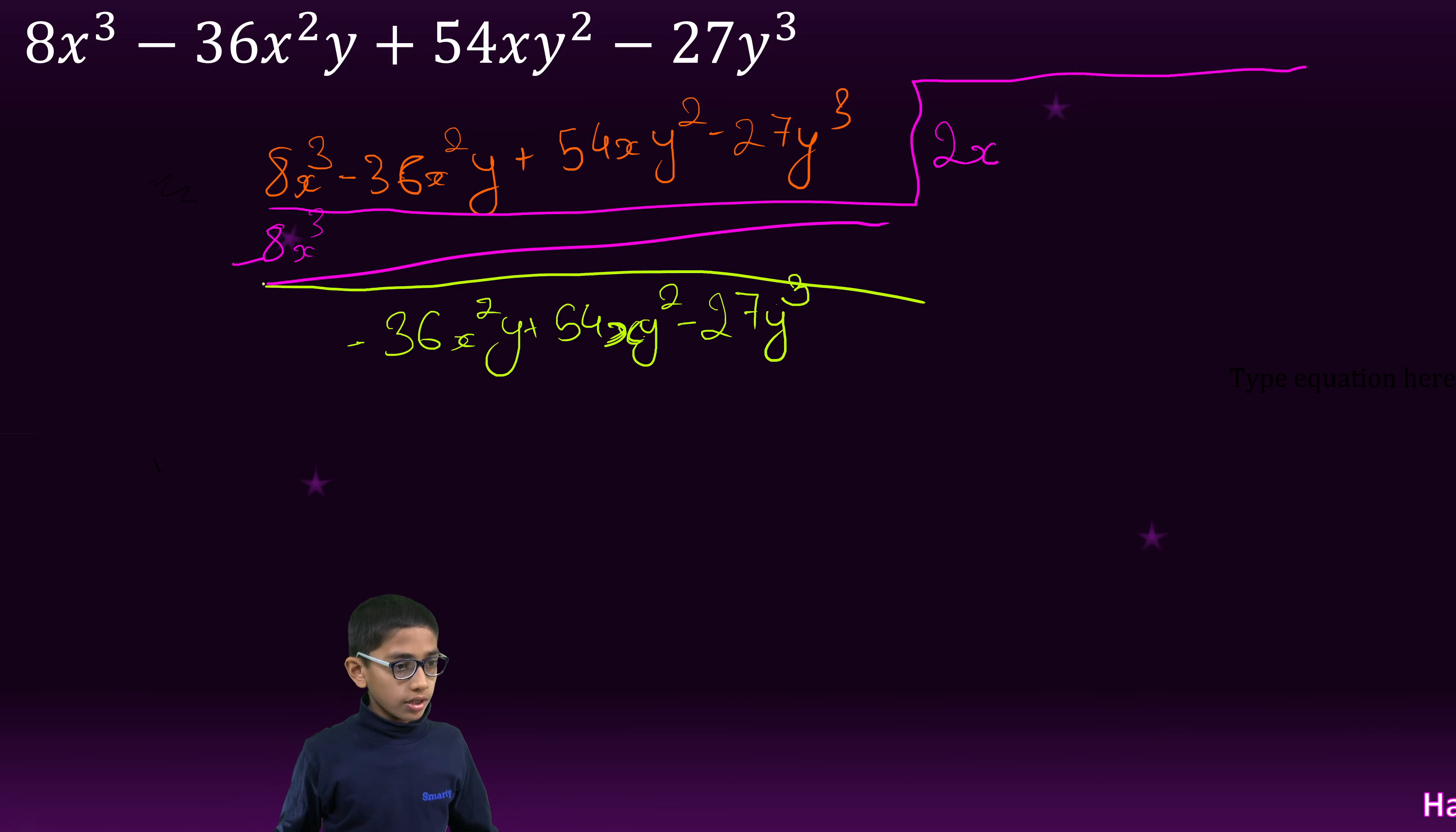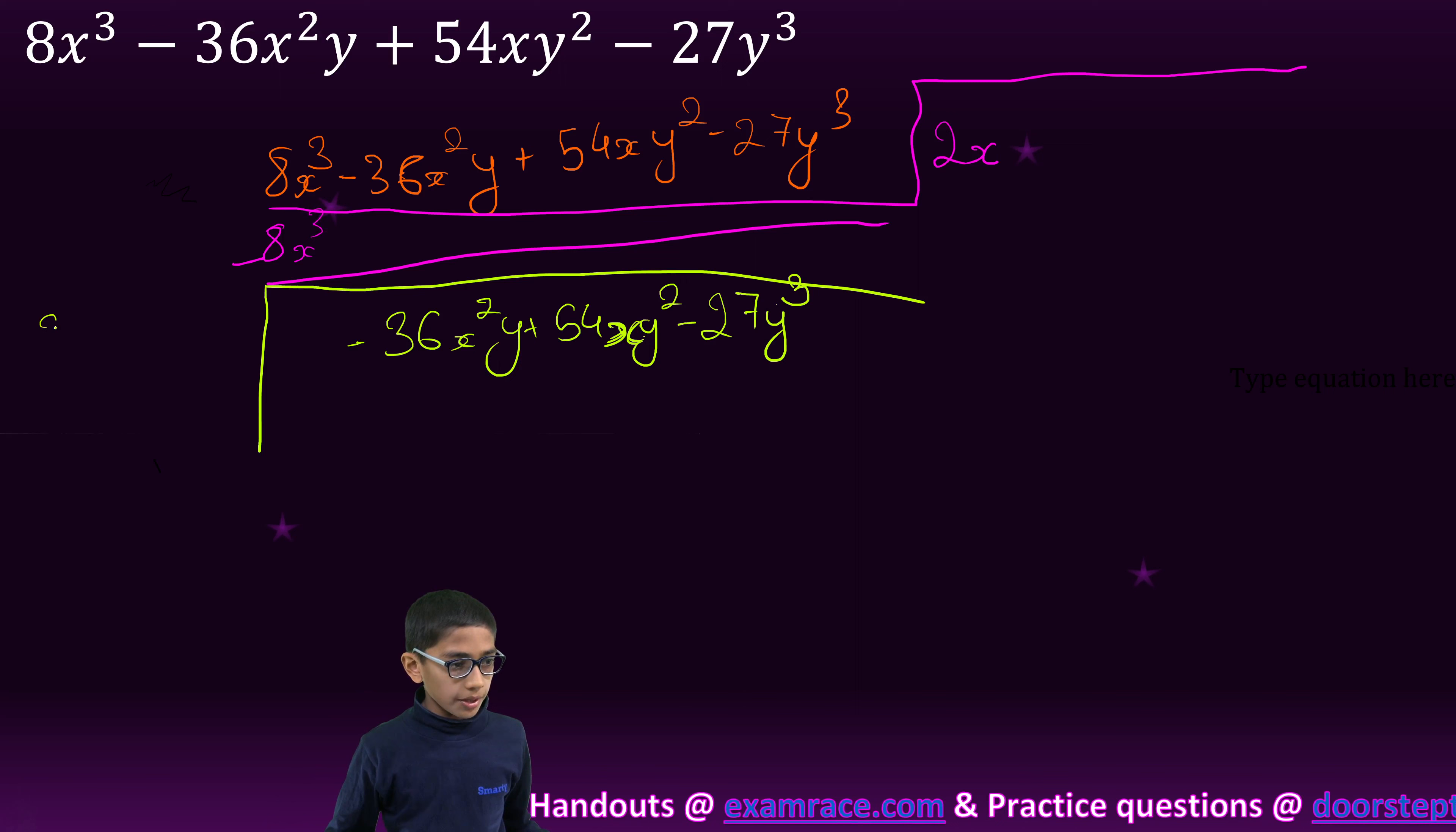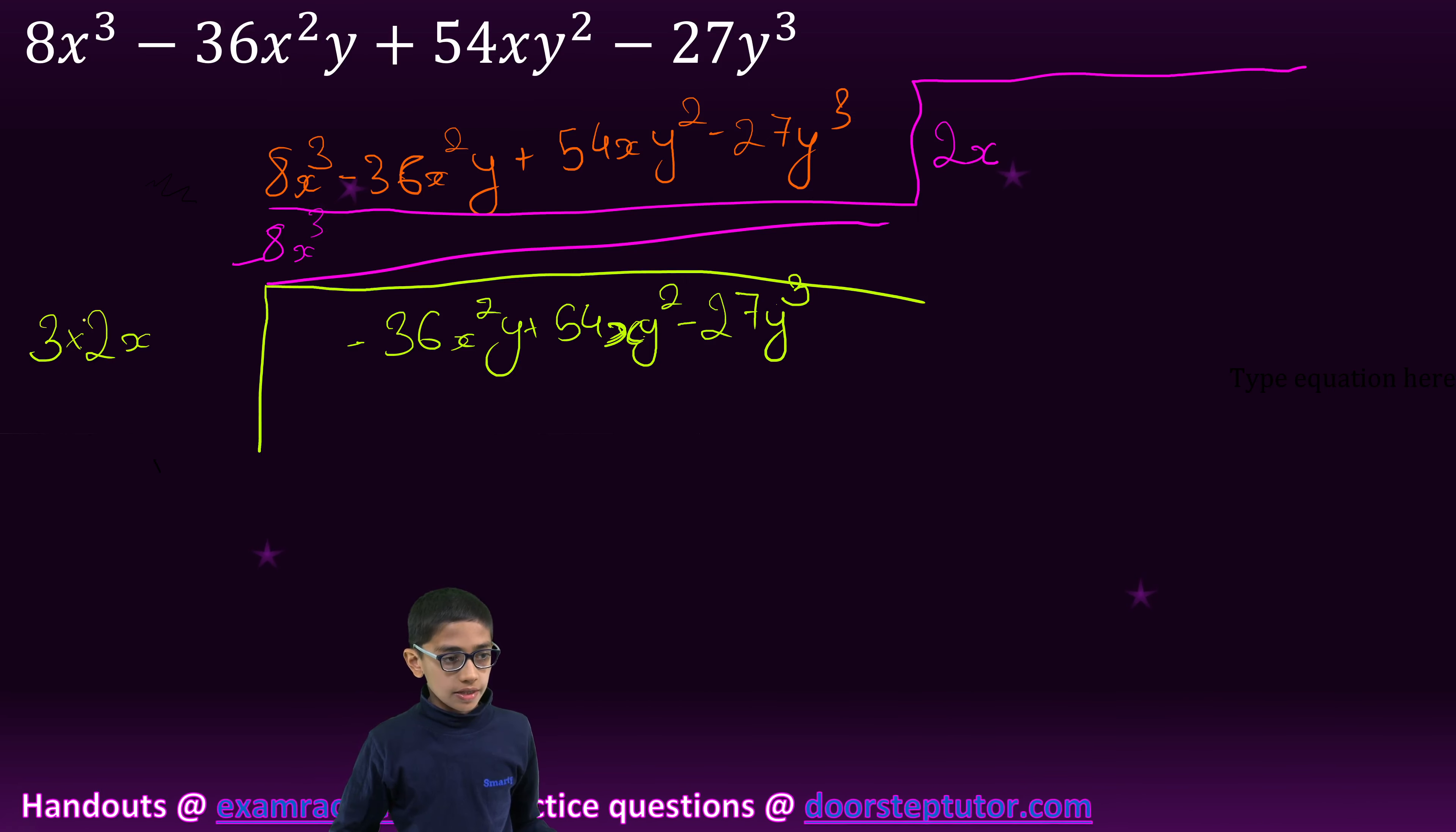We will write here. First, we will multiply 3 by 2x the whole square. So, it is 4x² into 3 which equals 12x².